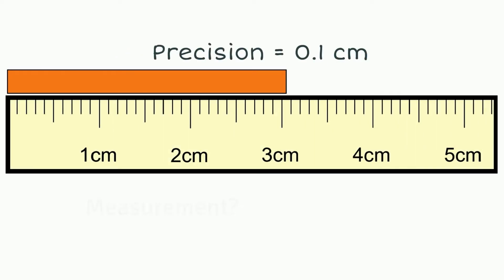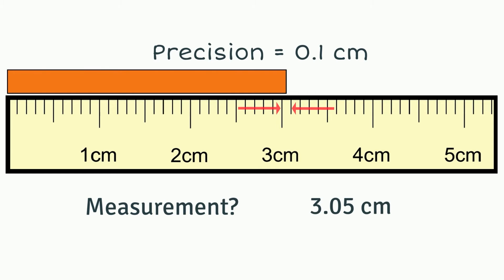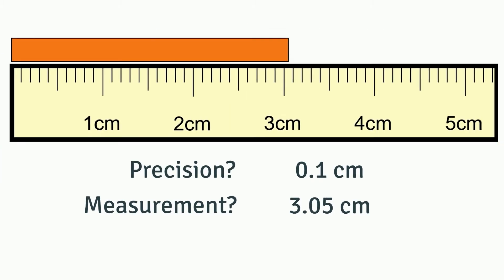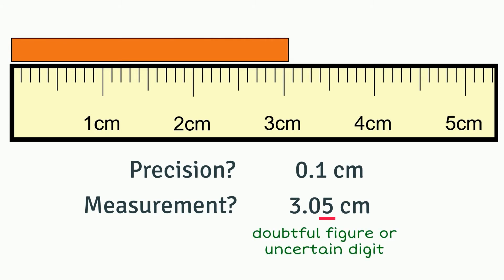Now, what is the measurement of this strip of paper above? Since the end of this strip falls somewhere in between 3.0 and 3.1, we can estimate that its measurement is 3.05 cm. In that measurement, the last digit is known as the doubtful figure or uncertain digit, simply because it is the value that is estimated.